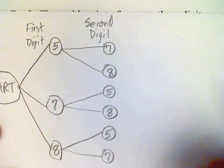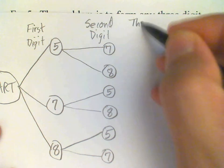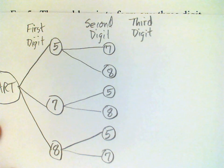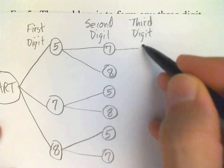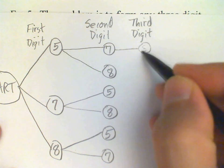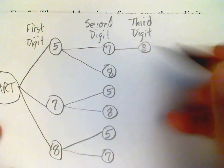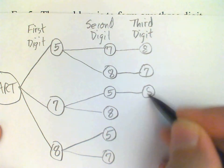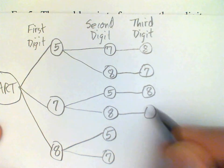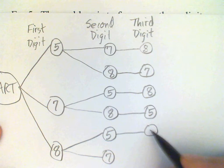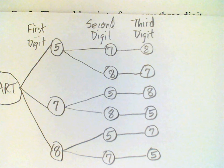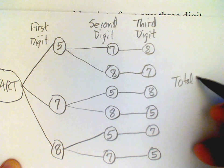And for the third digit, no choice at all, really, because once I've used two of the digits, then my third one is determined, right? I only have one choice, 8 in this case, 7 here, this one is 8, this one is 5, this one is 7, and this one is 5. Okay, so now I can just count up my twigs, and I see my total is 6.